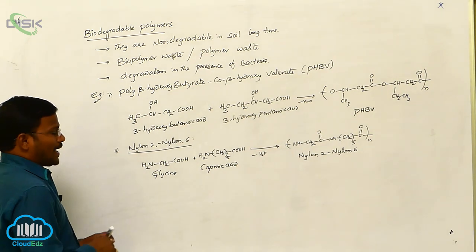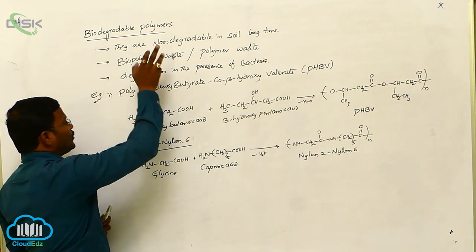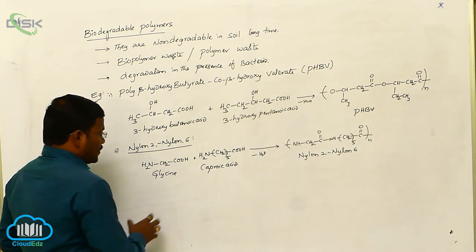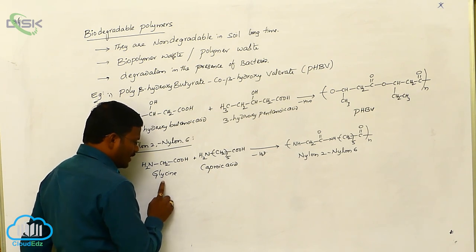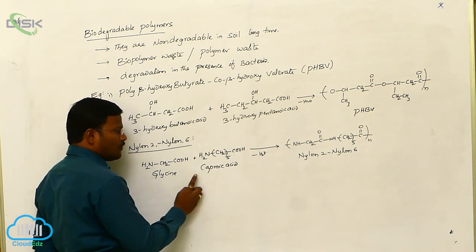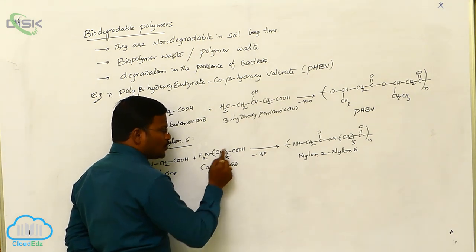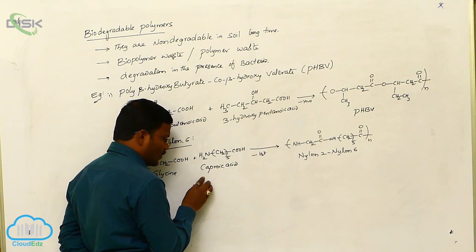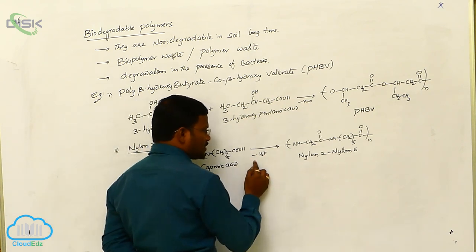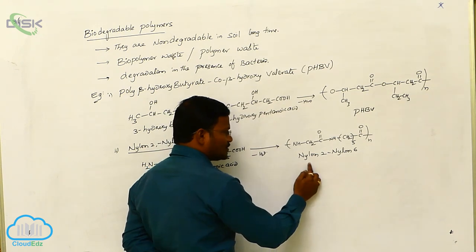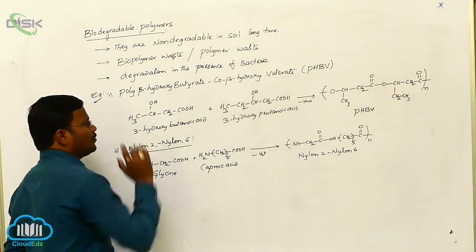Nylon 2, Nylon 6 is also a polymer which is a biodegradable polymer. The preparation of Nylon 2, Nylon 6 requires 1 mole of glycine and 1 mole of caproic acid, also called 6-aminohexanoic acid. When these two react with each other, condensation with loss of water molecule takes place to produce Nylon 2, Nylon 6, which stands as an example of biodegradable polymers.